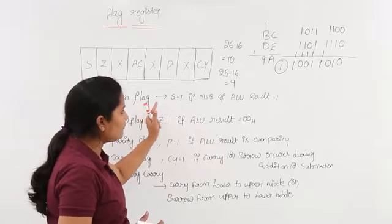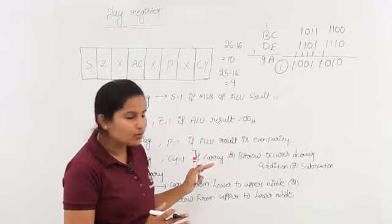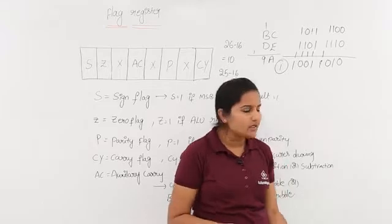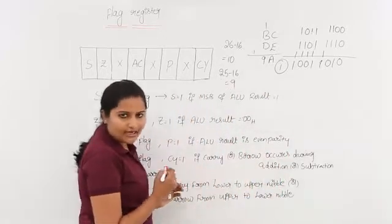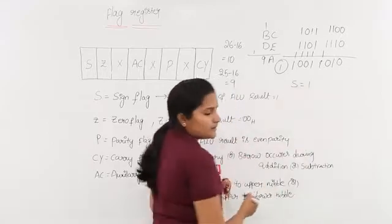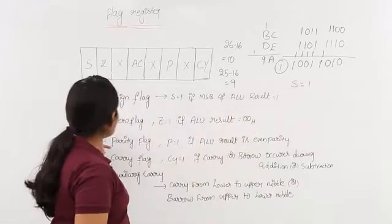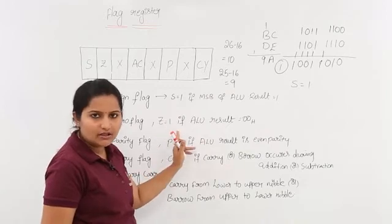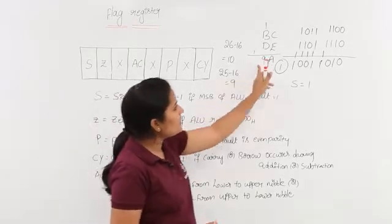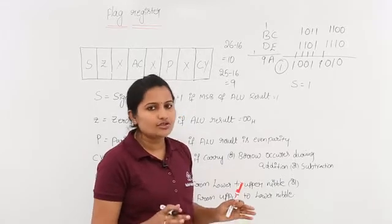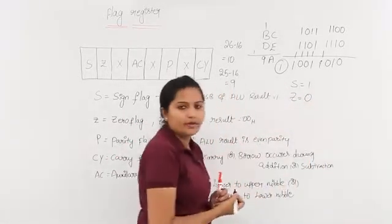Now placing values in the flag register: coming to S, the sign flag. When it will be 1 means if the MSB of the ALU result is 1. Since the ALU is 8-bit, the MSB of the result 9A is 1, so the sign flag S is equivalent to 1 for this operation. Coming to the zero flag: zero flag is 1 only if the ALU result is 00H, but here the ALU result is 9A, not 00H, so the zero flag will not be activated and will be put as 0.